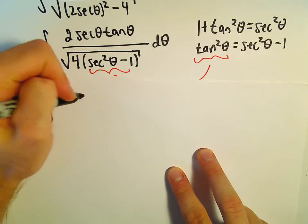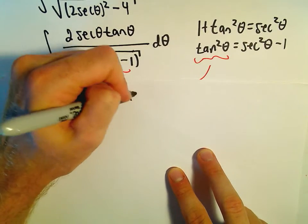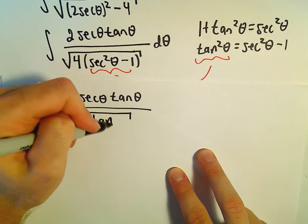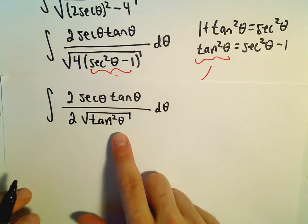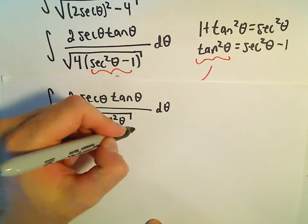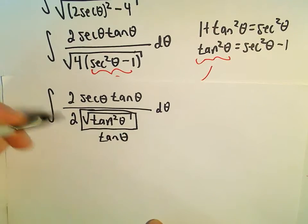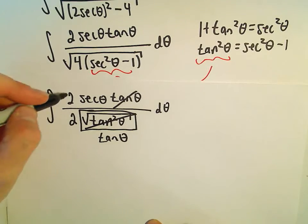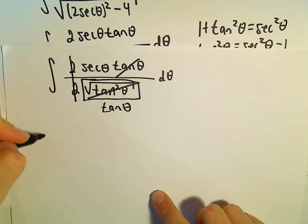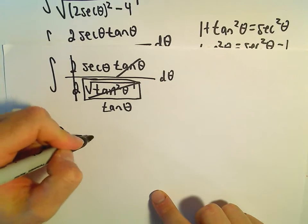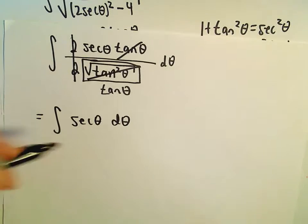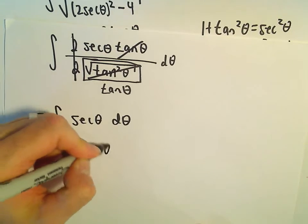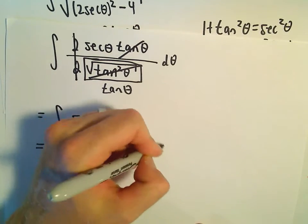We've got 2 secant theta times tangent theta in the numerator. The square root of 4 is just 2, and the square root of tangent squared theta is just tangent theta. The tangent theta terms cancel, and the 2s also cancel. So we're left with the integral of secant theta d theta, whose antiderivative is the natural logarithm of secant theta plus tangent theta, plus C.